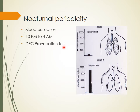There is one way around this: the DEC provocation test. If you give a tablet of DEC at 2 mg per kg body weight — usually 100 mg DEC — the microfilaria will come out into the peripheral blood even during daytime due to the effect of DEC. Blood can then be collected just half an hour after giving DEC. So if it is not feasible to collect blood at nighttime, the DEC provocation test can be done.